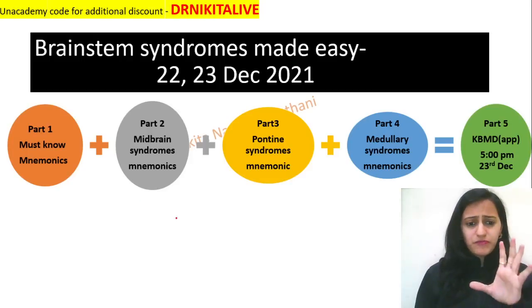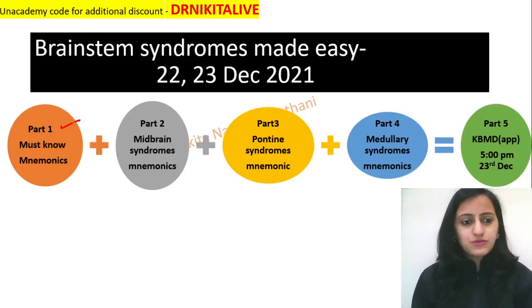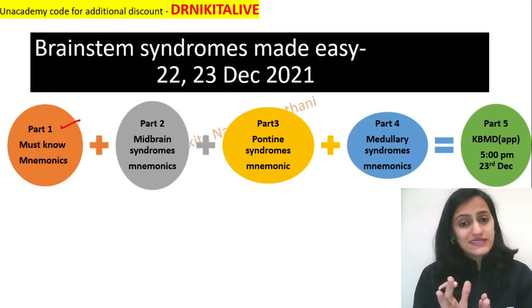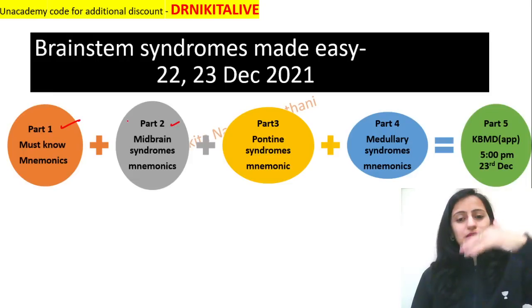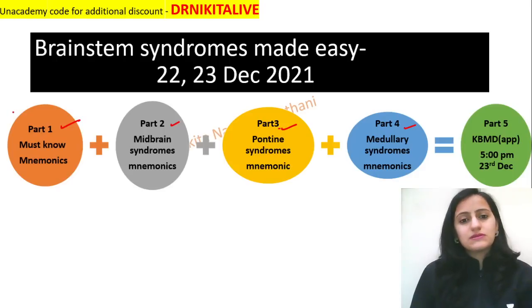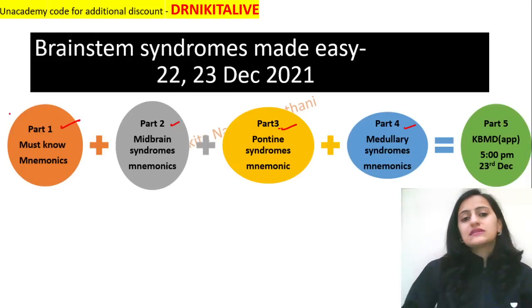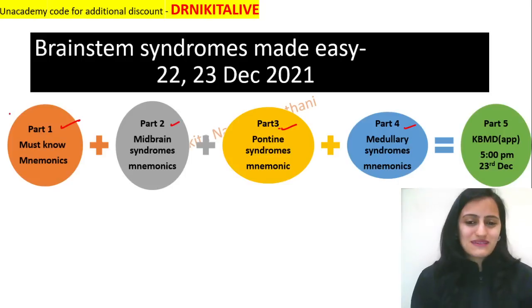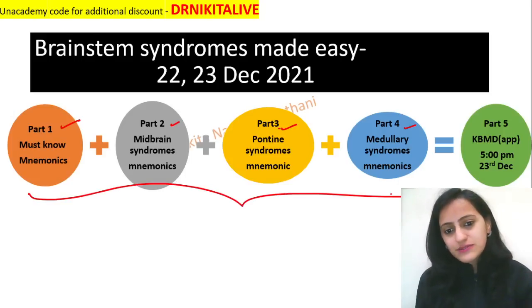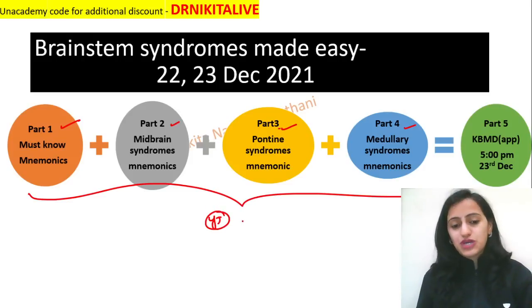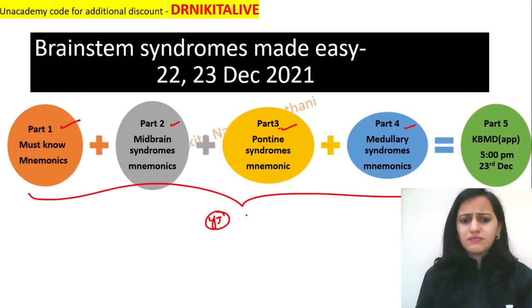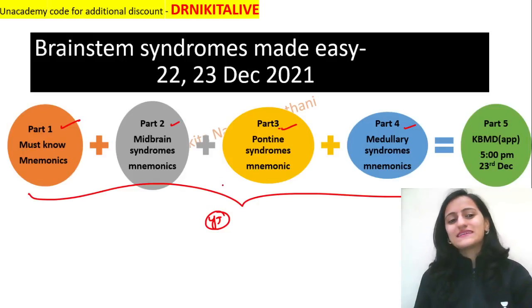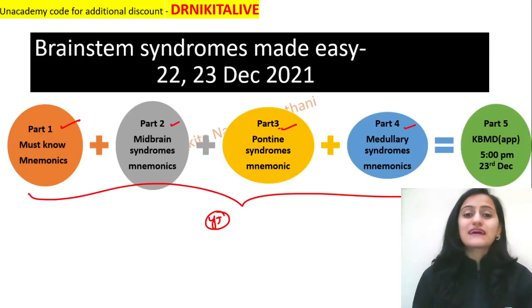We have a five-part series of videos. Part one will be the must-know mnemonics, which is this video. Then part two will cover midbrain syndromes, part three pons, and part four medullary syndromes — both medial and lateral. In midbrain we'll see Weber's, Benedict's, Nothnagel's, and in pontine we'll see Millard-Gubler, Raymond syndrome, Foville syndrome — mnemonics for each one. These four videos will be on the Academy NeedPG YouTube channel today and tomorrow, 22nd and 23rd, uploaded by afternoon.